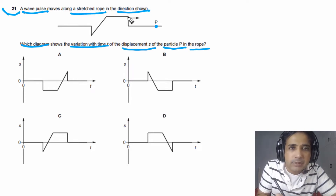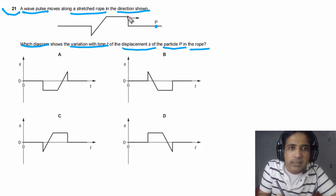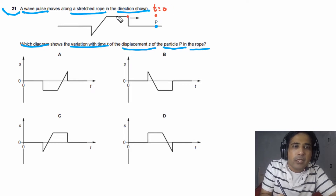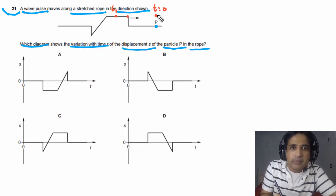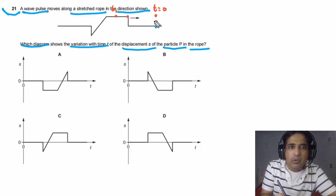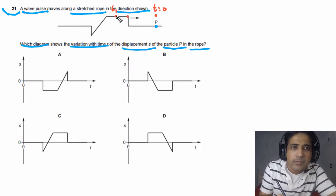First of all, imagine that when this part of the wave reaches this particle, what will be the displacement? The displacement will be equal to the wave pulse and we can say this is happening at time t equals 0. Now, at time t1, this part of the wave is passing this particle, so the displacement of this particle will be equal to this one.